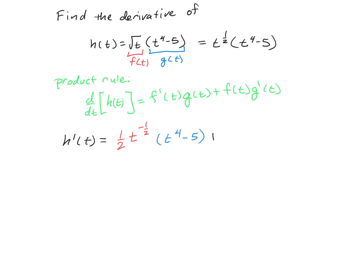Then we have a plus in our product rule. The first function is t^(1/2), and then the derivative of our second is 4t^3, using the power rule again.